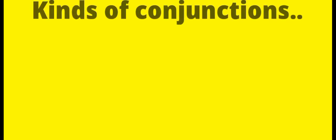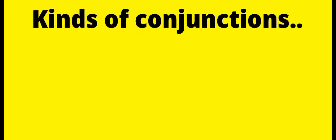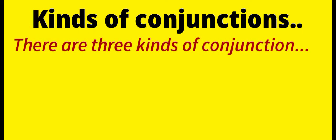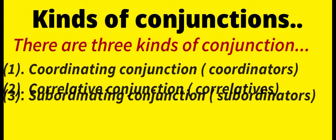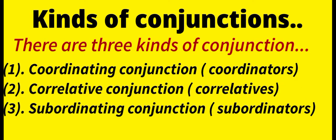Let's jump to the next topic: kinds of conjunctions. How many kinds of conjunctions are there? There are three kinds: first, coordinating conjunctions (coordinators); second, correlative conjunctions; and third, subordinating conjunctions (subordinators). In the first part of this video, we are going to learn the first kind — coordinating conjunctions.